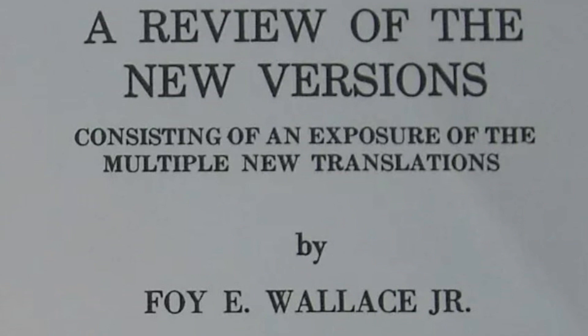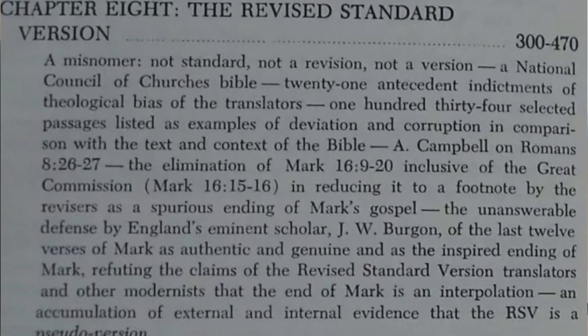Throughout the 1950s, anti-Revised Standard Version literature continued to flow from fundamentalist preachers and their publications. One was entitled, The New Perversion of the Bible. Two decades later, a Church of Christ preacher by the name of Foy E. Wallace Jr. devoted 170 pages to exposing the errors of the RSV. And this was done, and is still being done in some circles today.